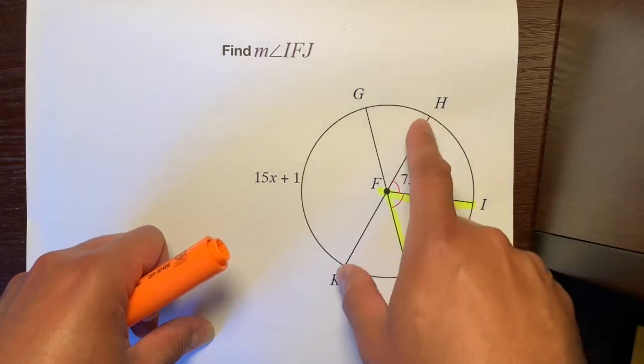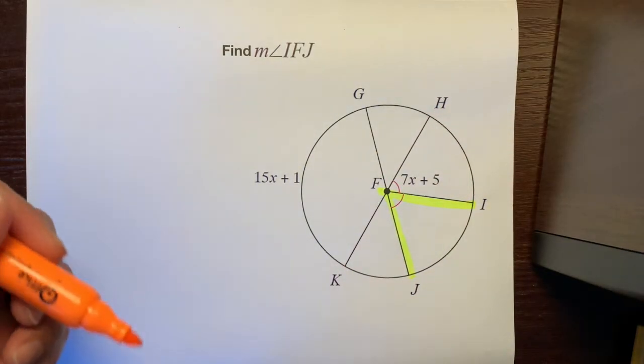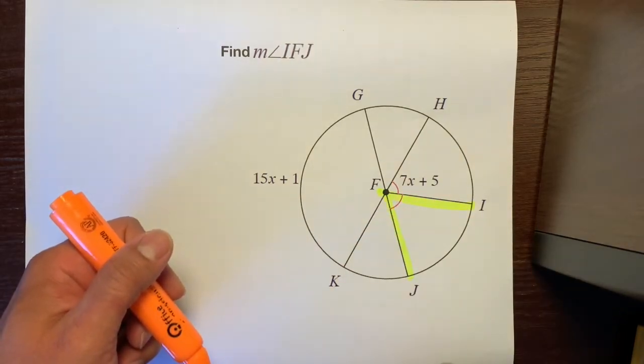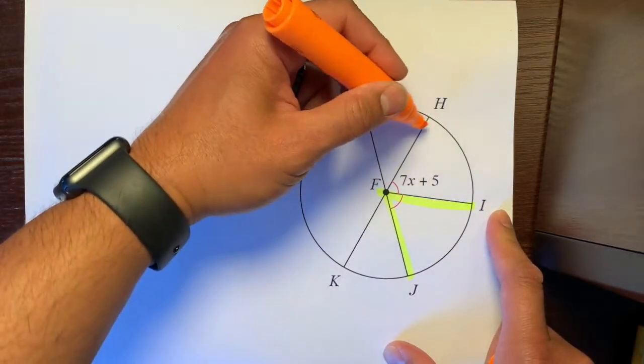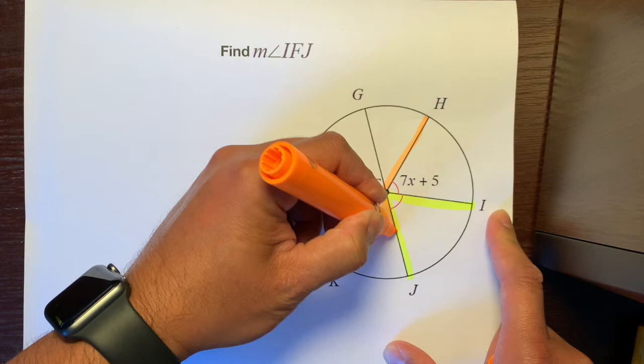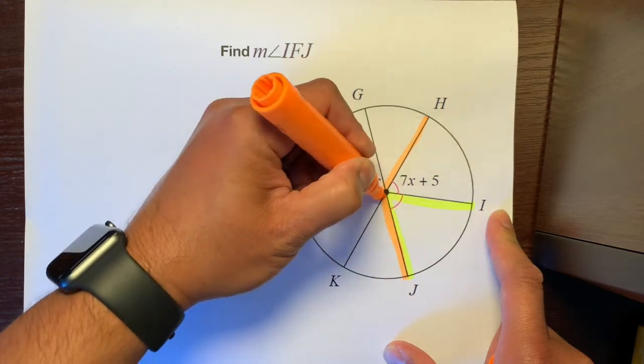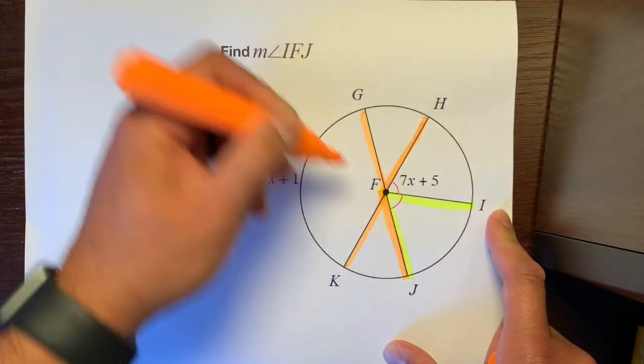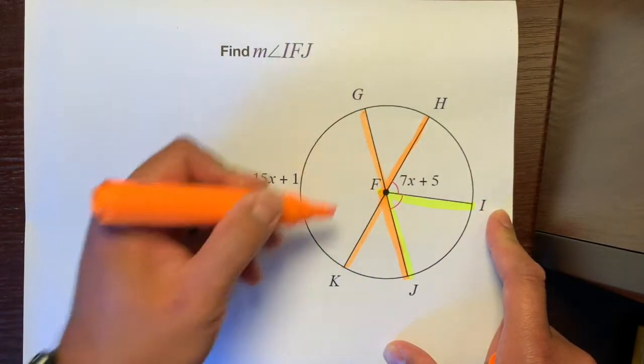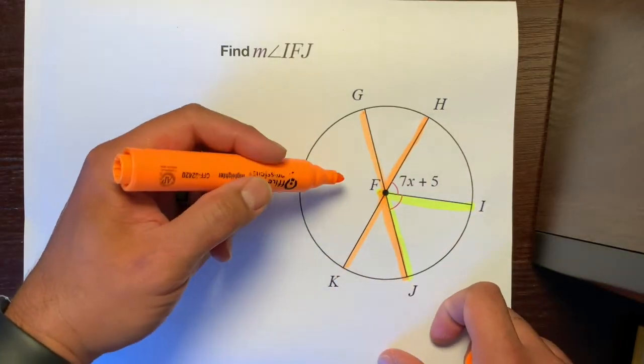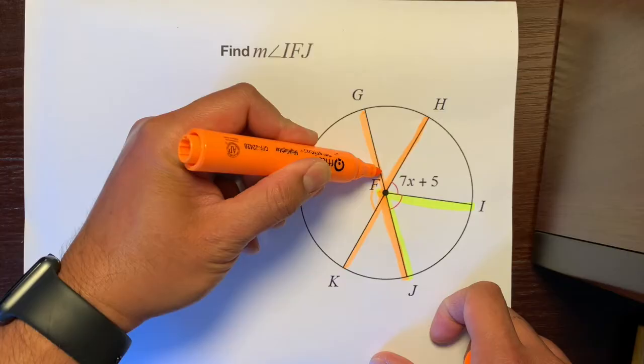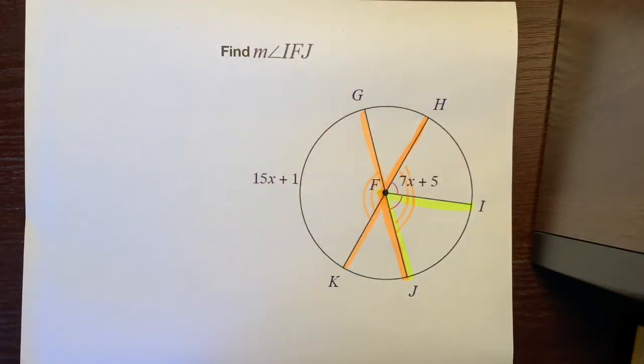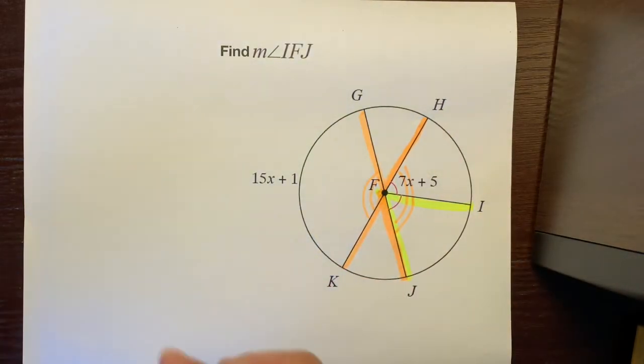7x plus 5. This right here. These two angles are congruent to each other, and something else that we notice is I'm going to highlight the sum of these two angles. These two angles put together are vertical to this angle right here. This entire angle, I'm going to put two arcs here, is congruent to these two angles put together because these are vertical angles.